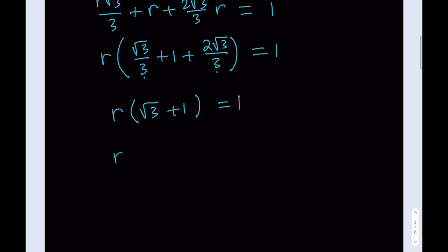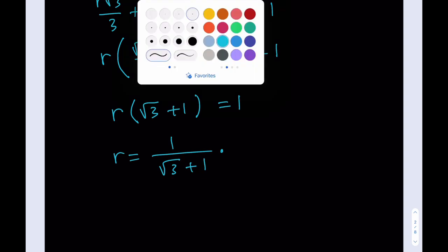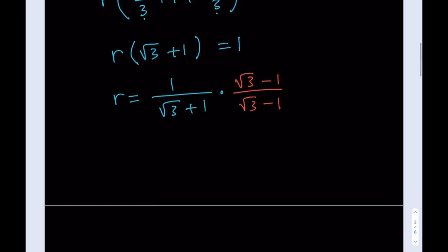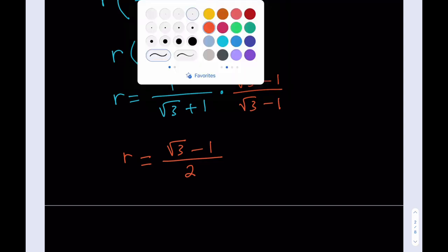And what I need to do is divide both sides by root 3 plus 1. And then what we're going to do is rationalize the denominator. Let's go ahead and do that now. I'm going to multiply by the conjugates, root 3 minus 1 over root 3 minus 1. And then this is going to be R equals root 3 minus 1 divided by 2. As you know, this is going to be 3 minus 1. So that's going to be R radius.